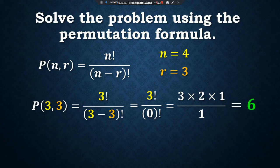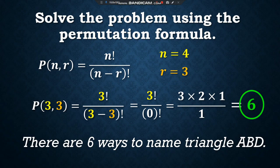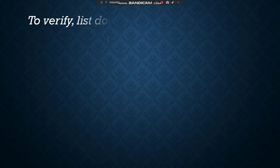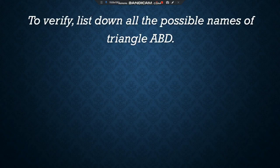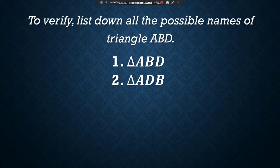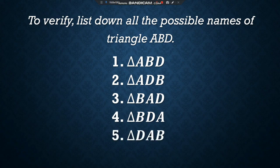Simplifying the resulting expression, we will get 6. Therefore, there are 6 ways to name triangle ABD. Let's verify if our answer is correct by listing down all possible names of triangle ABD. Systematically listing down these names, we have triangle ABD, triangle ADB, triangle BAD, triangle BDA, triangle DAB, and lastly triangle DBA. Easy, right?